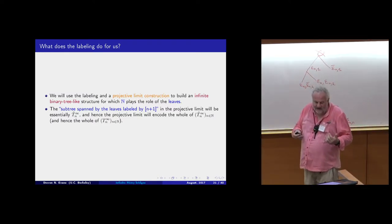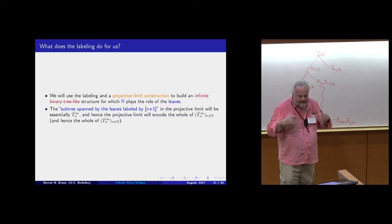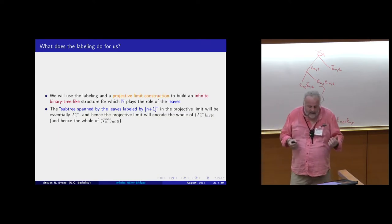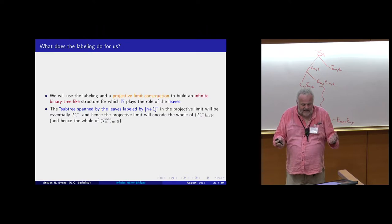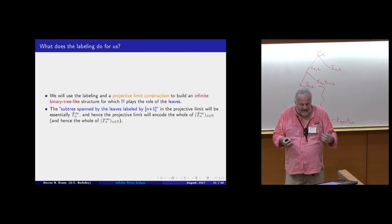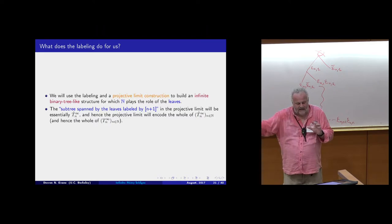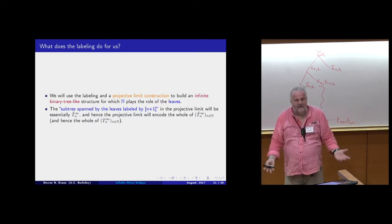We use this labeling, along with a projective-limit type construction, to build an infinite object that's in some sense binary-tree-like, where the leaves are labeled by the positive integers. In this infinite projective limit object, the way the leaves labeled 1 to n+1 are situated with respect to each other is essentially the labeled object at time n. So we encode the whole evolution in a single infinite object.